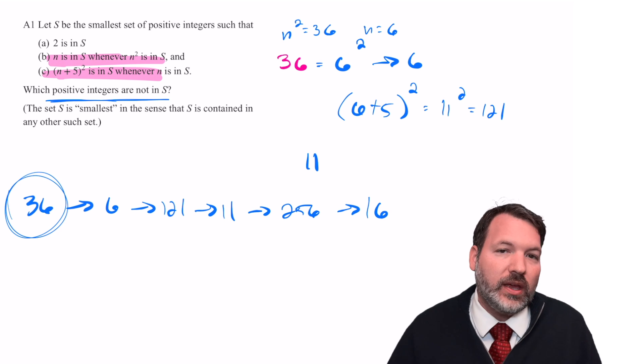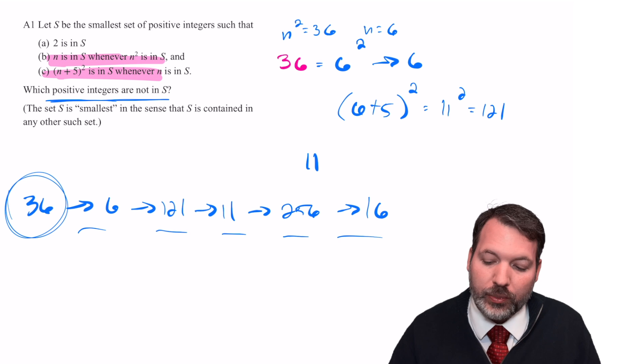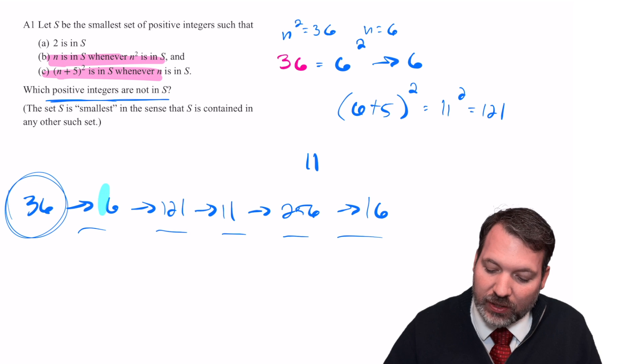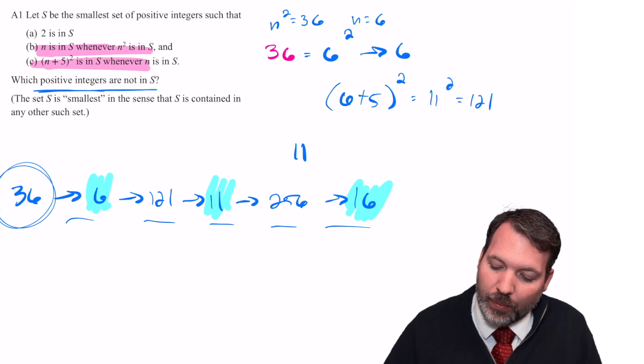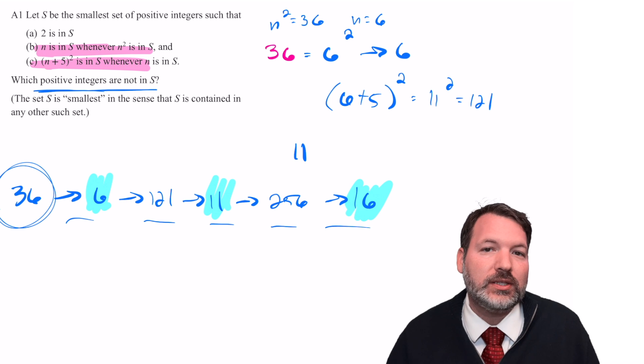So we go from 36 to 6 to 121 to 11, and we're off to the races. 11 plus 5 is 16. 16 squared is 256, so 256 is also in the set. But again, 256 is coming from 11 plus 5 squared. It's coming from a perfect square, and so 16 would have to be in the set. Once we start with any given perfect square, you can tell we get a lot of numbers following that, and specifically there's already a pattern about how those numbers are organized that's jumping out at us.